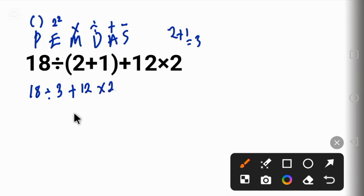Next, division before multiplication. 18 divided by 3 gives us 6 plus 12 times 2. Now we work the multiplication.